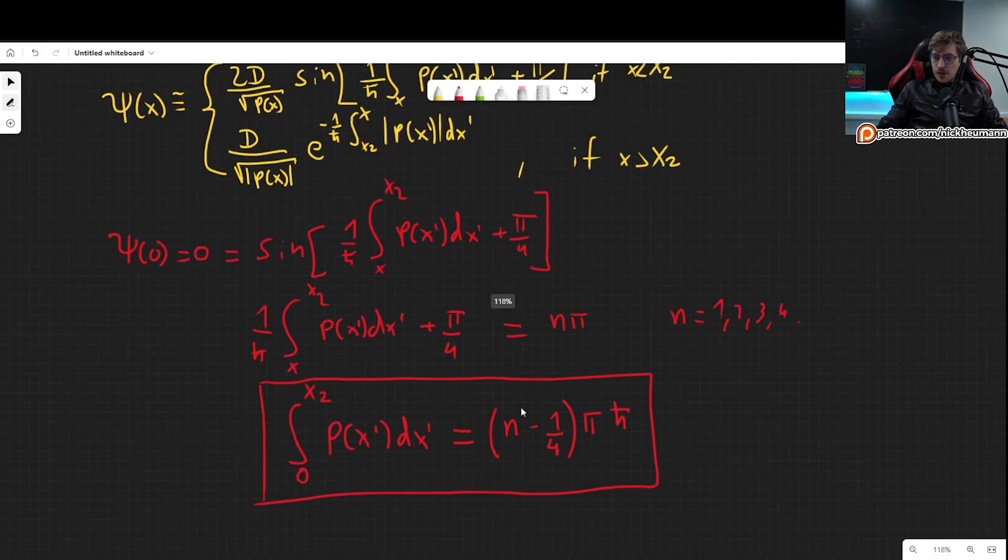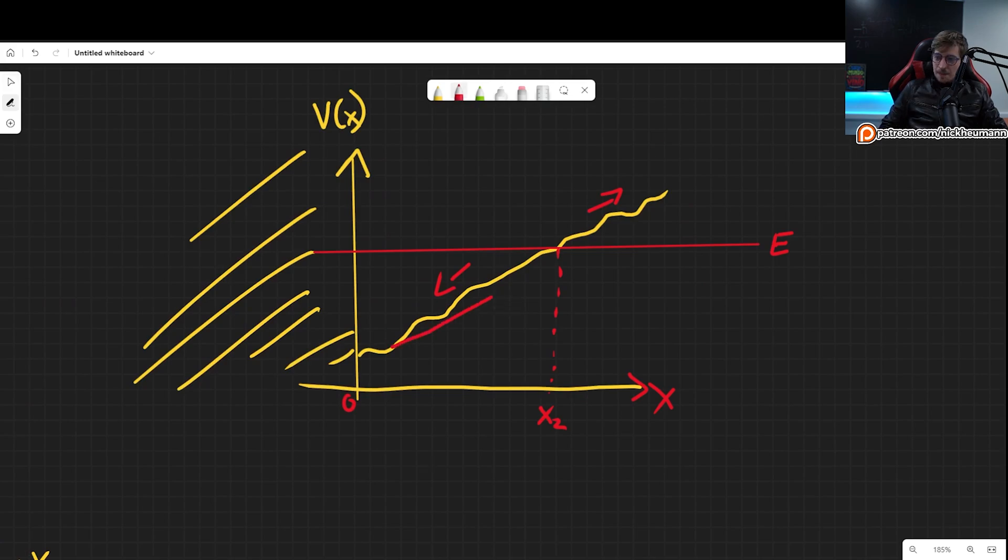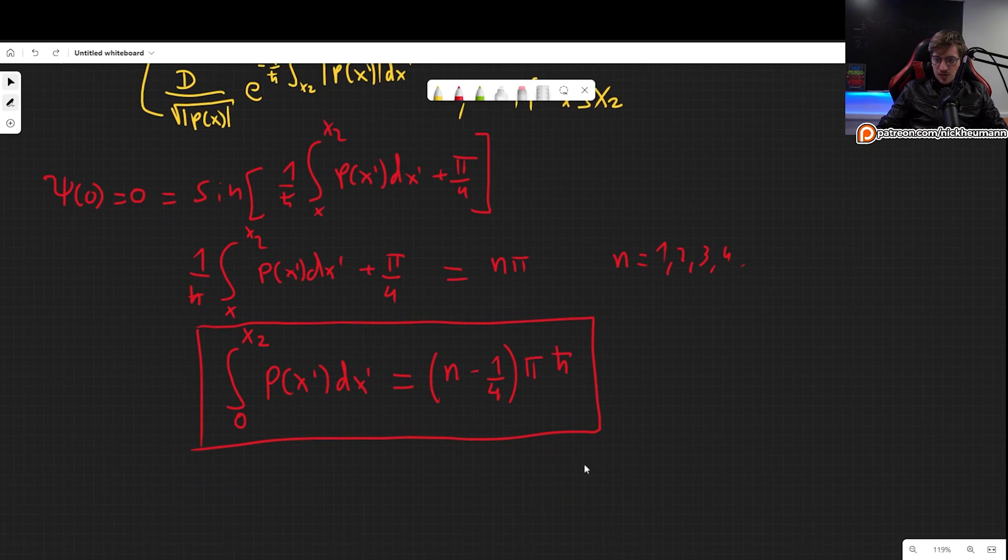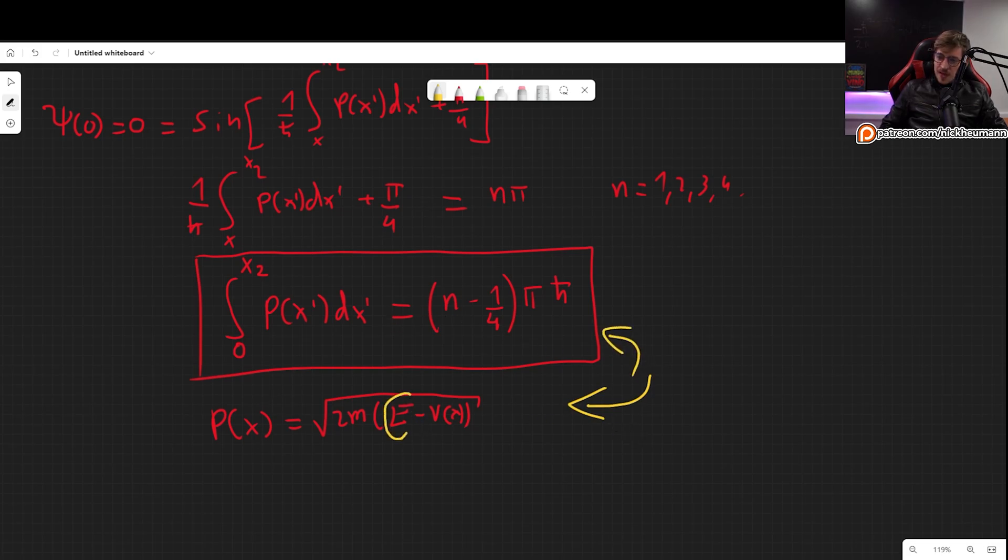This is a condition for any potential where we can apply the WKB approximation as long as it has a positive slope, and of course it is for the situation where we have one wall only. To the left, there is nothing. We have only this one side. But as long as we have any potential that satisfies this condition, then we can just say the momentum is square root of 2m. Now we are in the classical region, so it is E minus the potential. And there we go. And we simply solve for P, plug it in here, and we will be able to find the energy.